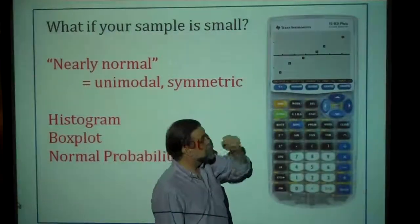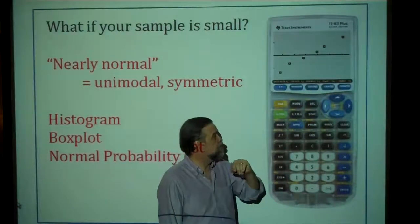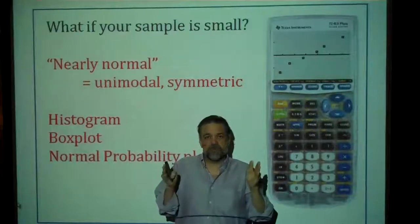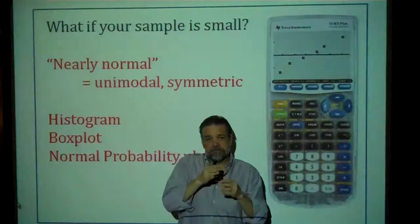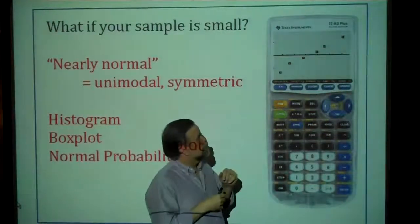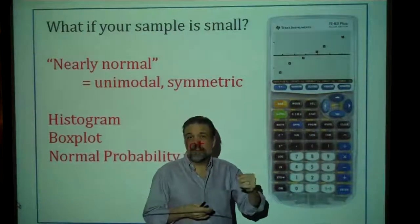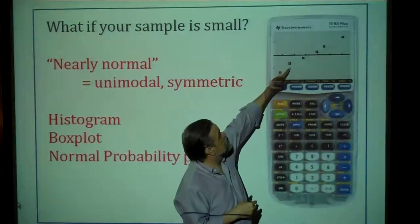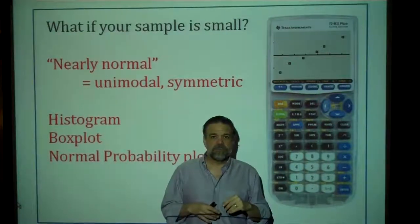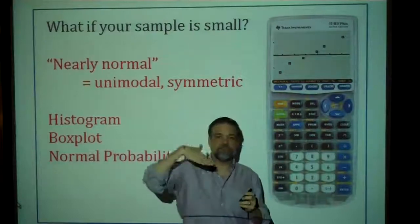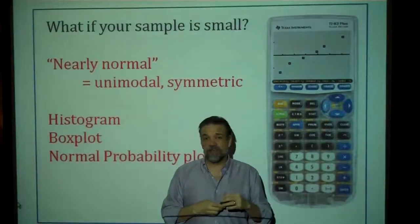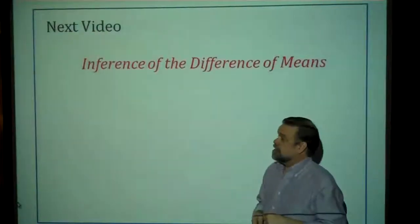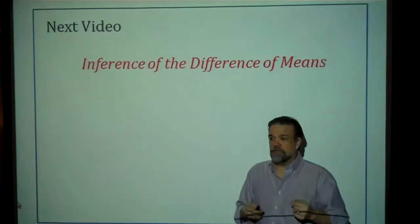Another thing you can look at is the normal probability plot. On the x-axis it plots the z-scores of your data points, and on the y-axis it plots the expected z-scores given the sequence of the points. What you're looking for is whether it looks fairly linear — if it does, the data looks like it came from a normal population. A small twist at the very end is okay. But if it's curving one way or the other, that indicates fairly skewed data and you'll have a problem. If it looks linear, you're good to go. Our next video will be on inference for the difference of means.